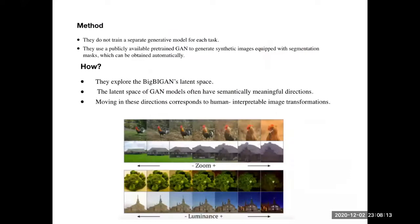In this paper, they don't train a generative model for each task. They just use BigBiGAN's pre-trained weights all the time, which can be obtained automatically. What they do is explore BigBiGAN's latent space, which gives them semantically meaningful directions. Moving in these directions corresponds to human-interpretable image transformations. In their first paper, they discovered directions such as a zoom effect on cars and houses, and a luminance effect on images.